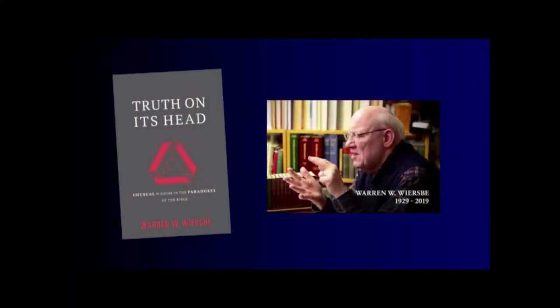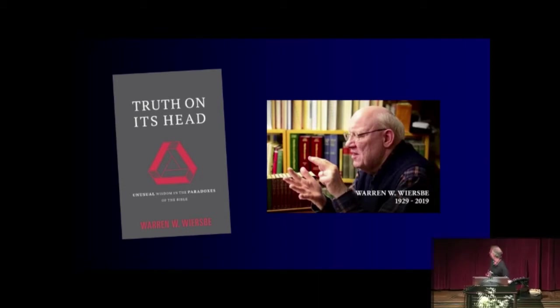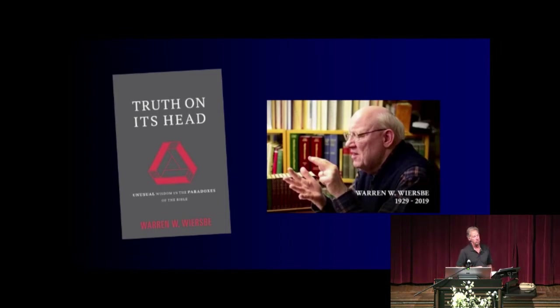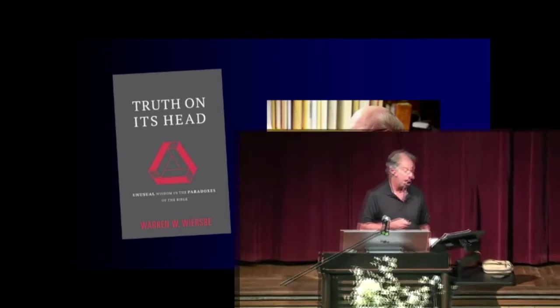We did a little series with the young people, probably about a year and a half ago, on paradoxes, and I found it very interesting. Credit goes to a book by Warren Wiersbe, an author I really enjoy who went to be with the Lord. The book is called 'Truth on Edge' — these paradoxical statements. I read a couple of them and thought, let's do those. Warren Wiersbe actually put this book together; he's got many books, commentaries and things like that, and I particularly enjoy the way he writes.